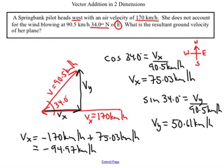Now I'm going to add my vy's together and there is only one vy. And it's upwards. 50.61 kilometers per hour. So I've added all my x components together. I've added all my y components together.